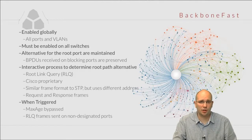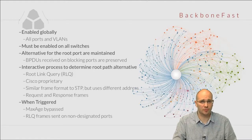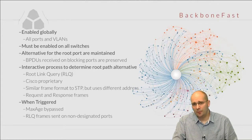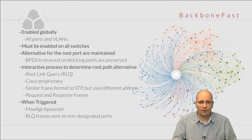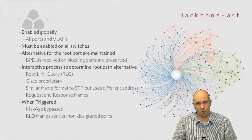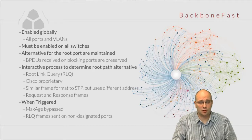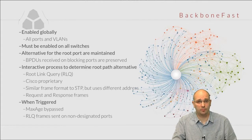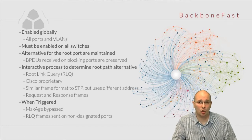Backbone Fast is another Cisco proprietary extension to the spanning tree protocol. The purpose of Backbone Fast is to allow switches to find an alternative path to the root should they lose their root port. In order for Backbone Fast to work, it needs to be enabled globally on the switch, which means it cannot be enabled only on some interfaces or some VLANs — it's a global operation on the switch.